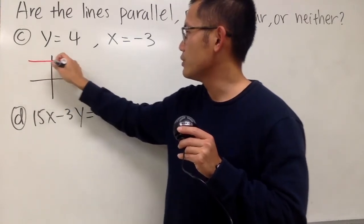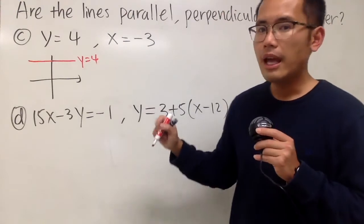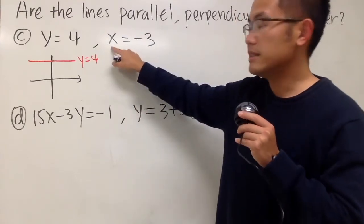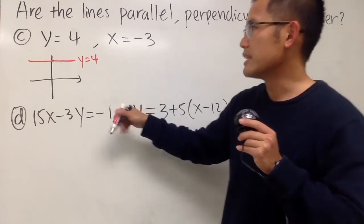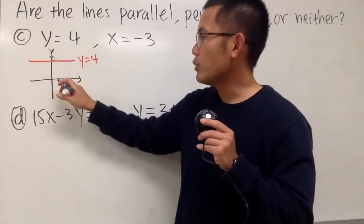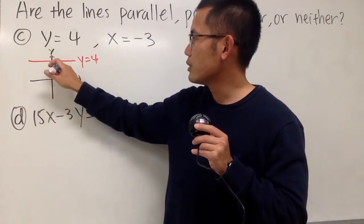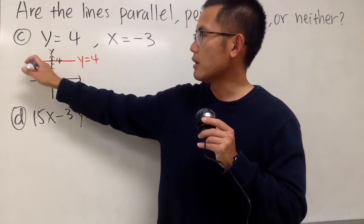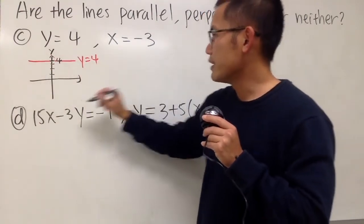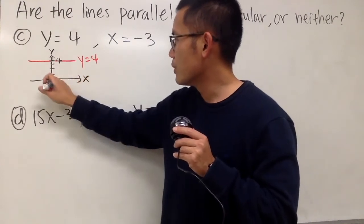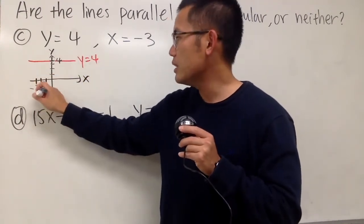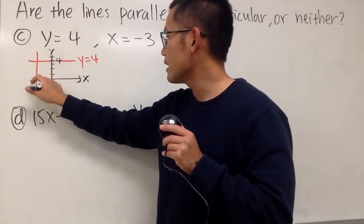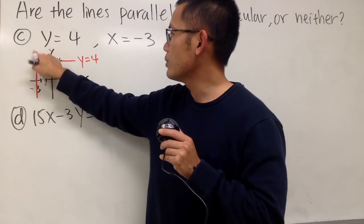The slope of y equals 4 is 0 — it's a horizontal line. On the other hand, when we have x is equal to negative 3, that's a vertical line. Remember, whenever x equals a number, that's a vertical line. On the y-axis, go to 4 and you get a horizontal line. On the x-axis, go to negative 3 and the line goes straight up and down — that's x equals negative 3.